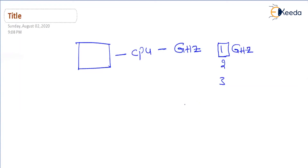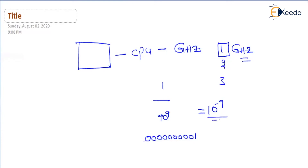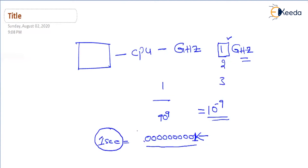What is 1 gigahertz? 1 gigahertz is 1 divided by 10 to the power 9, which equals 10 to the power minus 9. That means there are 9 zeros after the decimal point before a 1 — that is 0.000000001. This means that in 1 second, our time will be divided into these many pieces, and the CPU will be able to perform that many tasks.